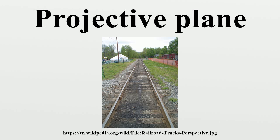Finite field planes: by Wedderburn's theorem, a finite division ring must be commutative and so a field. Thus the finite examples of this construction are known as field planes. Taking K to be the finite field of q = p^n elements with prime p produces a projective plane of q² + q + 1 points. The Fano plane is denoted by PG, and the third example above is the projective plane PG. The Fano plane is the projective plane arising from the field of two elements. It is the smallest projective plane, with only 7 points and 7 lines.